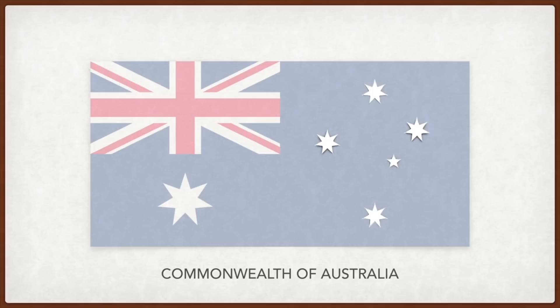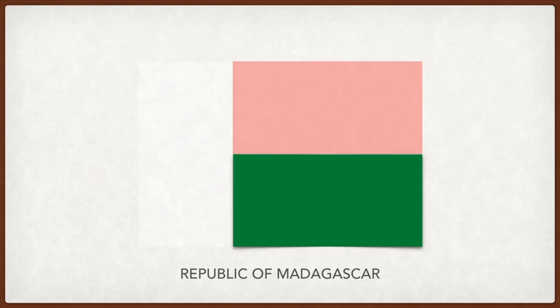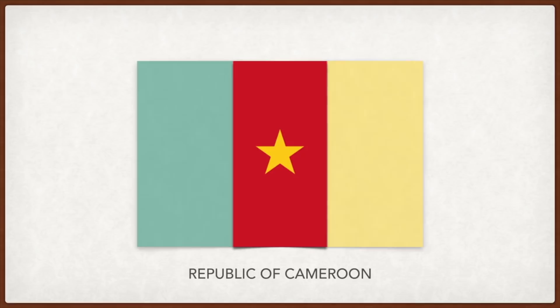Madagascar: red and white were the colors of the last Merina monarch before French rule, and green the color for peasants who played a big part in Madagascar's fight for independence. Cameroon: the red stripe stands for unity, the star is the star of unity, the yellow stands for the savannahs in the north, and green is for the forest in the south.